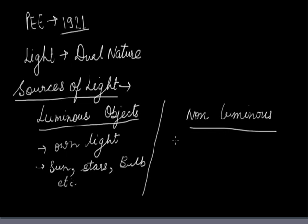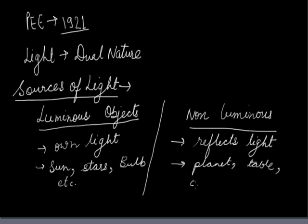But non-luminous objects are those objects which actually reflect the light of luminous objects. For example, planets, table, chair, etc.